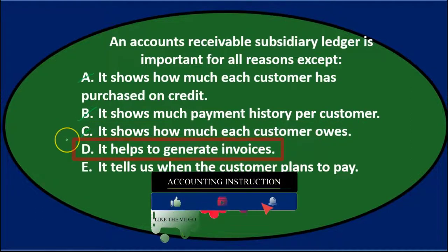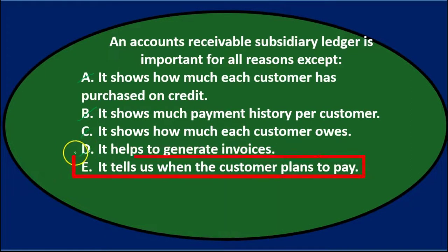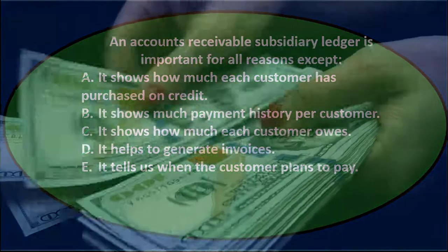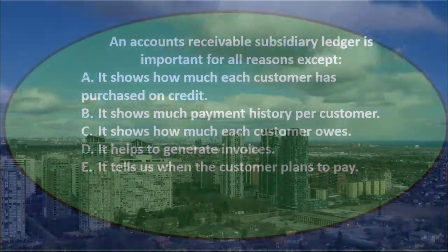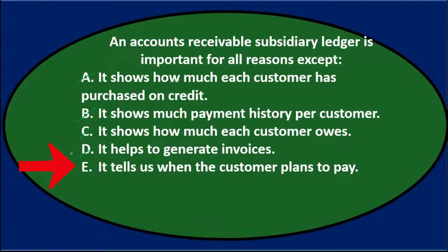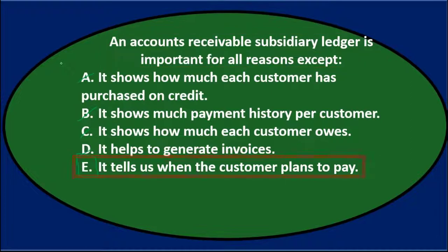D says it helps to generate invoices — it shows how much customers owe, so it helps collect on or generate invoices. That looks good. E says it tells us when the customer plans to pay. Now it does have the payment due date, but the customer could pay any time — if it's due in 30 days, they could pay anytime within those 30 days. We can't know when the customer plans to pay. So E is the correct answer: an accounts receivable subsidiary ledger is important for all reasons except E — it tells us when the customer plans to pay.